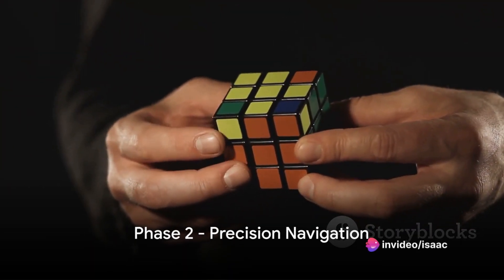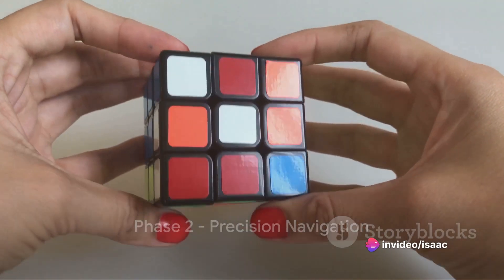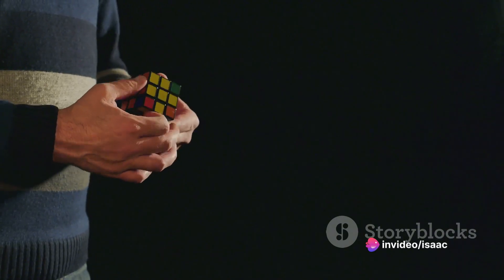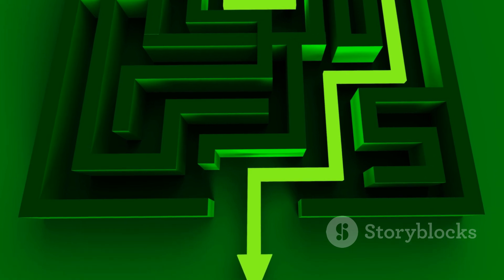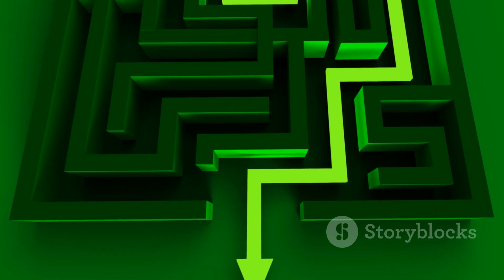The second phase is all about precision. Once the cube reaches the simplified state, the algorithm then takes it from there to the solution, move by move. It's like having a precise map to navigate from the landmark to the exit of the maze.